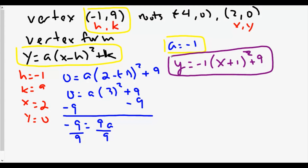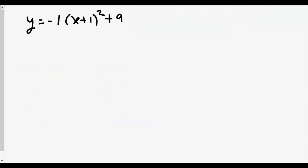Now comes the more algebraic part that we've hopefully practiced — expanding our equation. We're going to expand and multiply everything out to get our A, B, and C values to find our discriminant. So: Y equals negative one times X plus one times X plus one, plus nine.